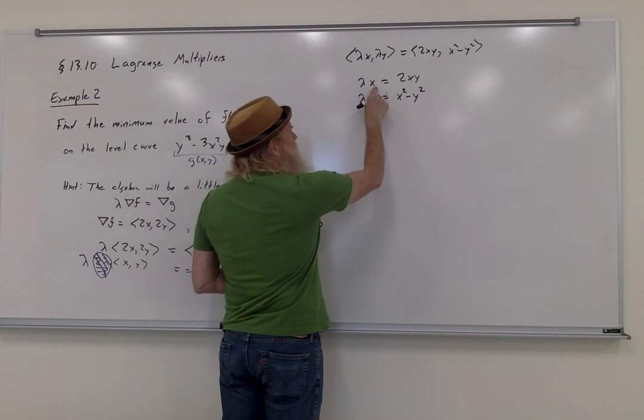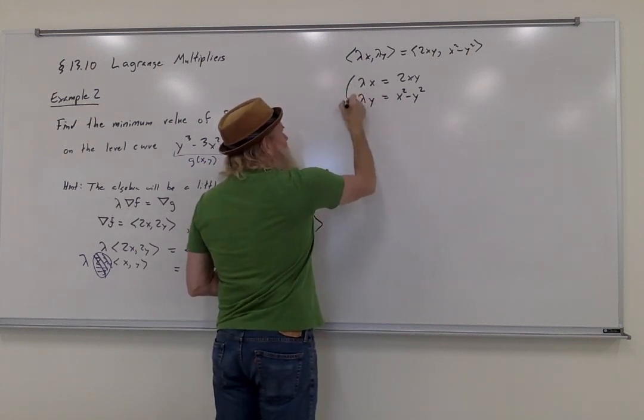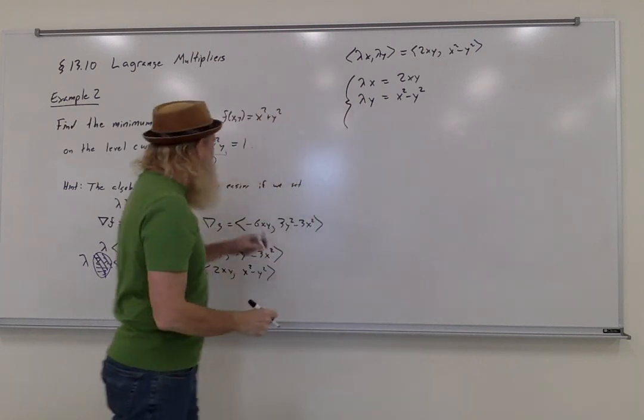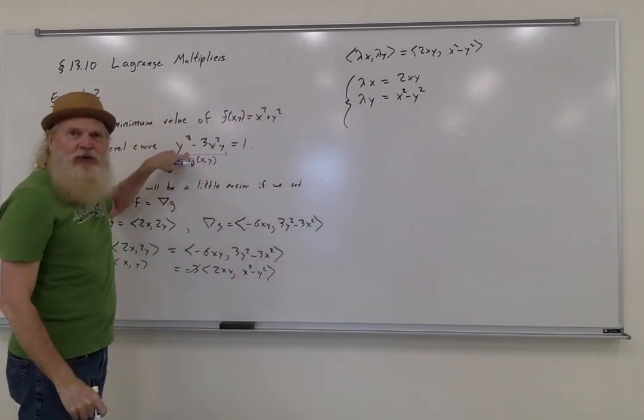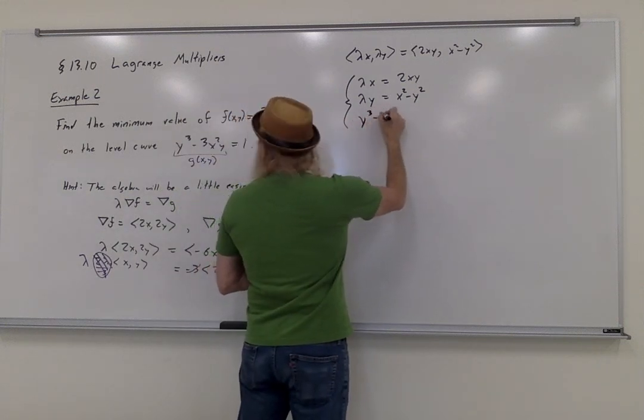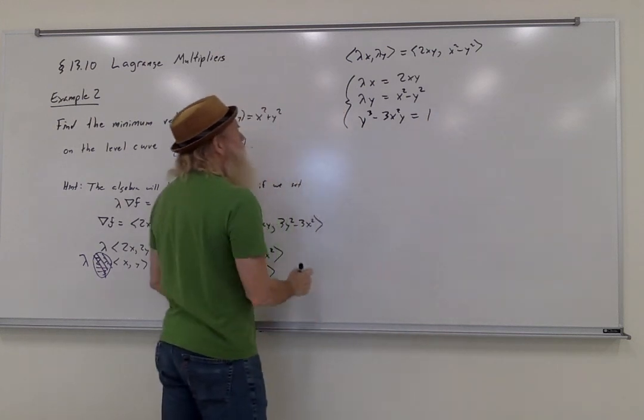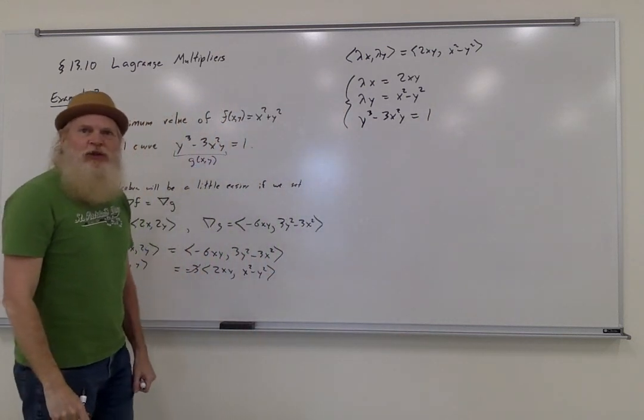Now notice that this is a system of two equations, but there are three variables: x, y, and lambda. We're going to add on a third equation, as always. That third equation is going to be the constraint. y cubed minus 3x squared y equals 1. And that's going to be the system of equations we need to solve.